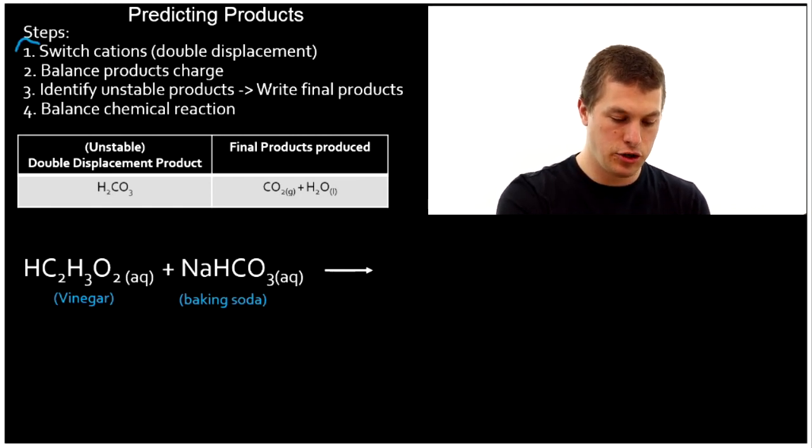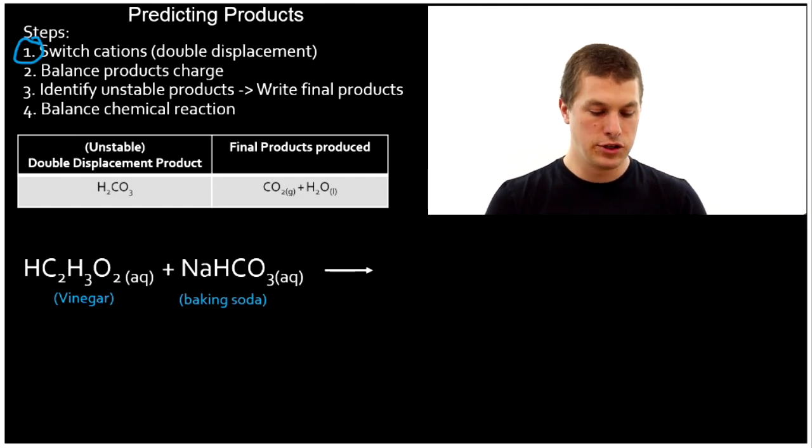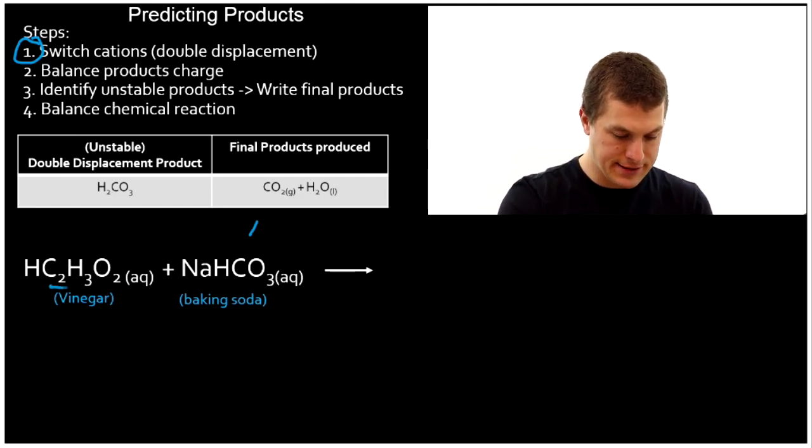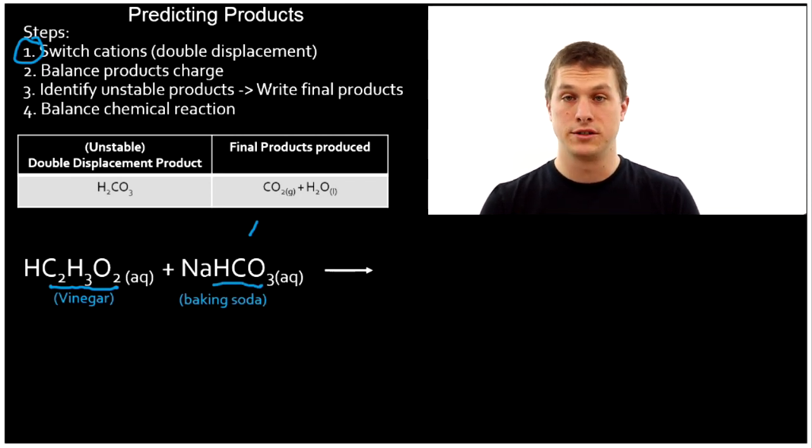The very first step that we need to do here is switch the cations, what's known as a double displacement reaction because we're displacing the cations. That'll look similar to your first step for precipitation reactions or for acid-base reactions. To identify the cations, you need to know your polyatomic ions. So you need to be able to recognize this is acetate and this is hydrogen carbonate, or else it's hard to know what to switch.